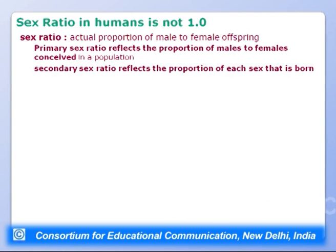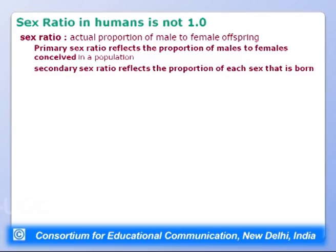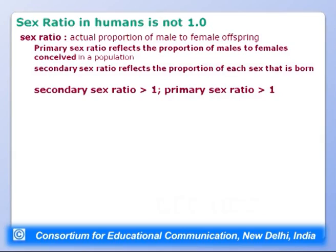The secondary sex ratio is observed to be greater than 1, as is the primary sex ratio. The secondary sex ratio exceeds 1 possibly because males have a higher survival rate than females. The primary sex ratio also exceeds 1, suggesting male progeny are conceived more often. Theoretical assumptions for a sex ratio of 1 include: equal numbers of X- and Y-bearing sperm produced, equal viability and motility of both sperm types, and equal egg receptivity to both.